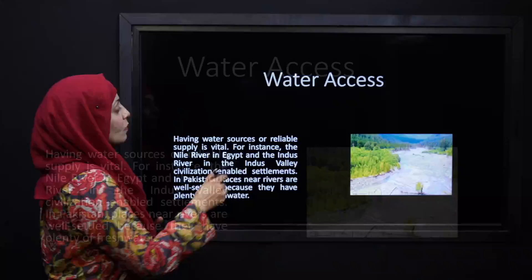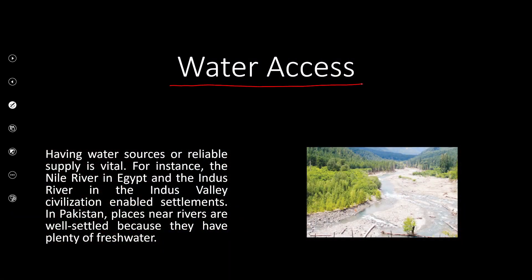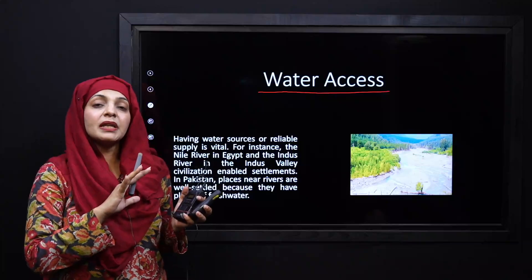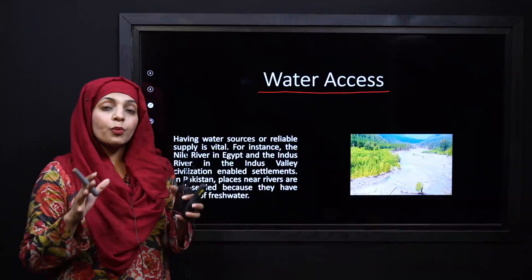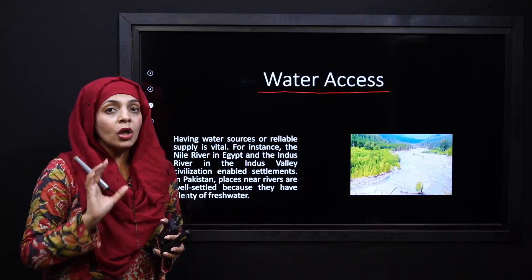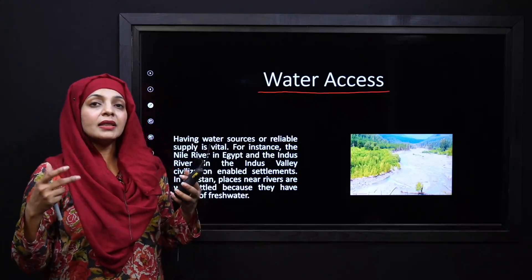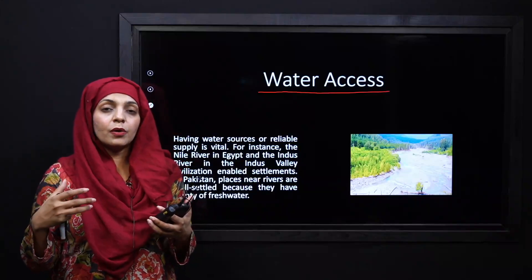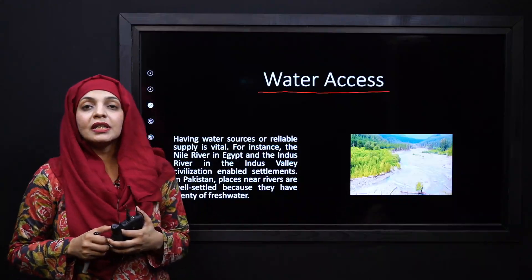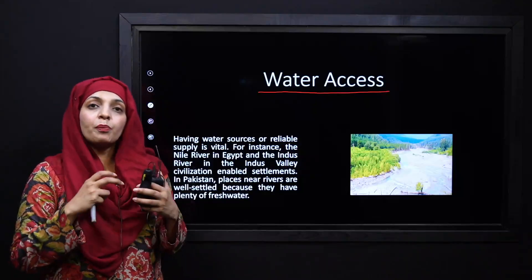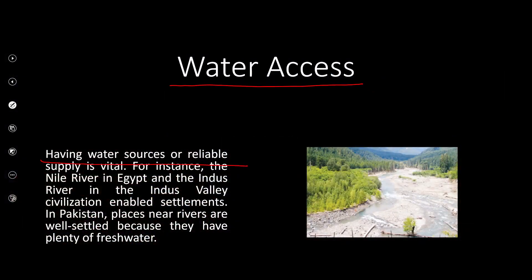Next is water access — it is the most important thing. When we look at early civilizations on a map, all of them were located near rivers. This is because at the start, people were not engaged in industrial activities and relied on rivers for water and farming. Having a reliable water source is vital. For instance, the Nile River in Egypt and the Indus River in the Indus Valley Civilization enabled settlements. In Pakistan, places near rivers are well settled because they have plenty of fresh water.